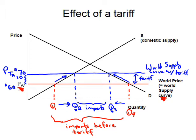In terms of government revenue: the height of the tariff multiplied by the amount of imports gives the tariff revenue that goes to the government. This is represented by the rectangular box on the diagram.